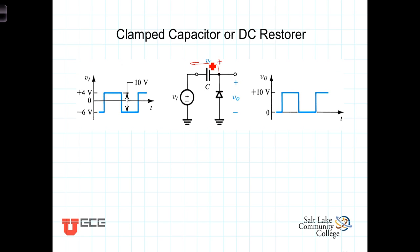During the negative traversal of the voltage, this capacitor will charge to a point where it's plus to minus six volts.